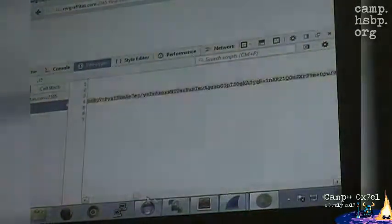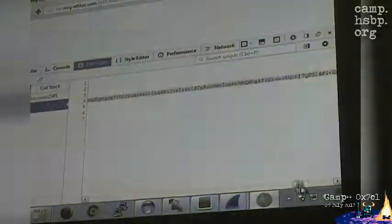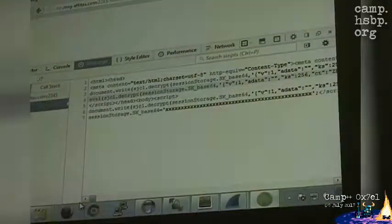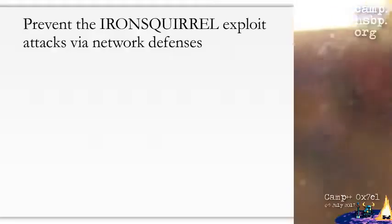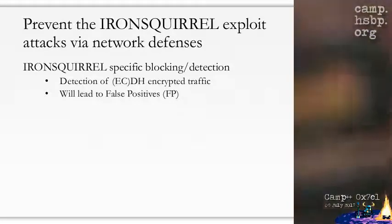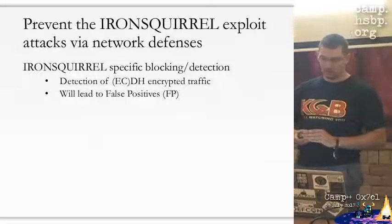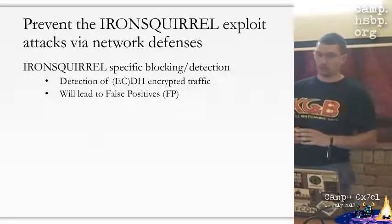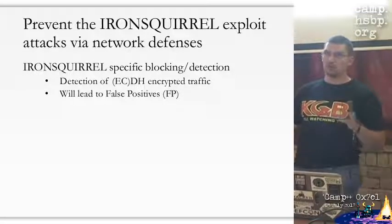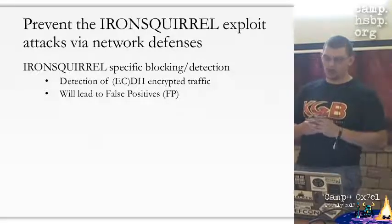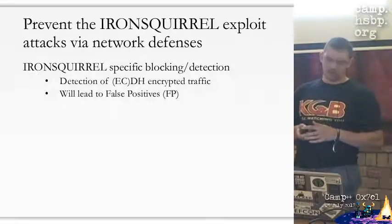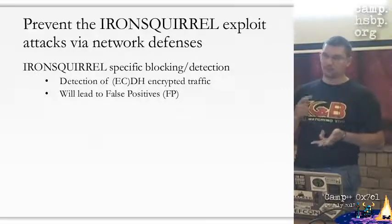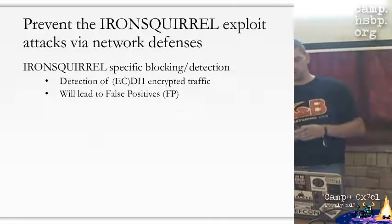These are just a bunch of encrypted blobs. If you are on the defense side, how can you prevent these Iron Squirrel attacks? You can try to detect that some encryption happened - for example, detect the crypto libraries or detect an encrypted blob with high entropy. The issue with this is that it can be easily bypassed and it leads to a lot of false positives, so I couldn't really recommend this technique.